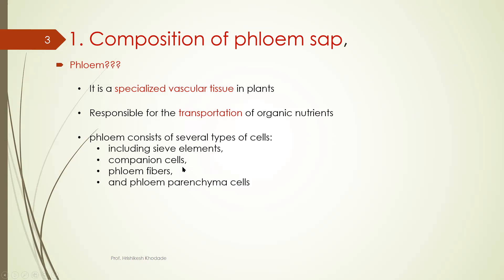The phloem consists of several cells because they are specialized tissues. Tissue includes cells. So which are these cells included? Sieve elements, companion cells, phloem fiber and phloem parenchyma.